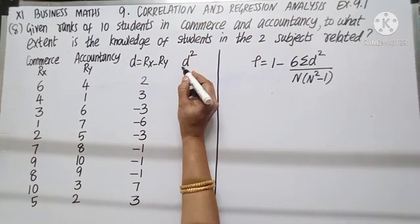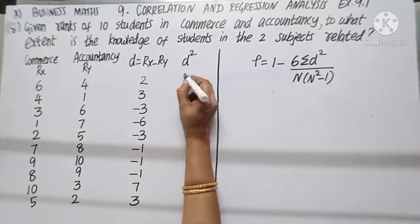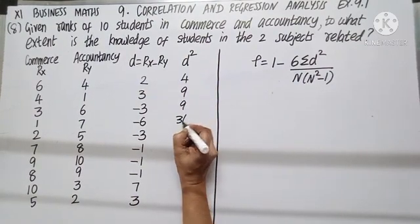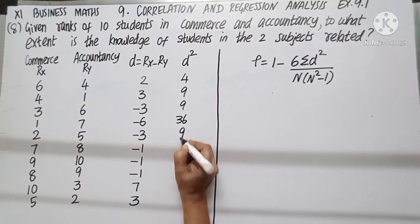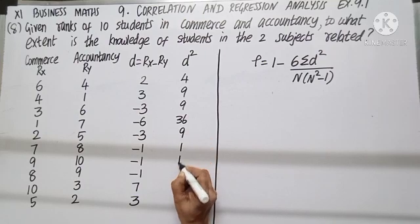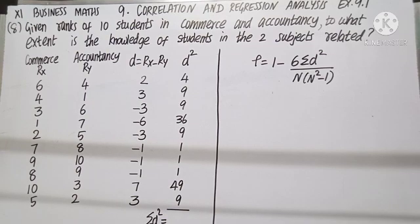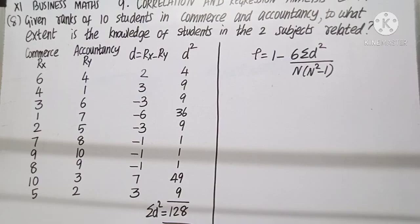As we square the D values: 4, 9, 9, 36, 9, 1, 1, 1, 49, 9. Totaling these, sigma D squared equals 128.